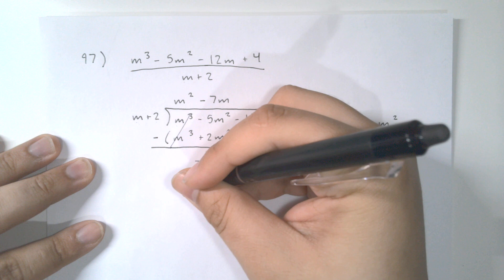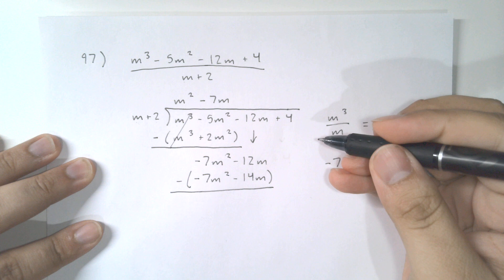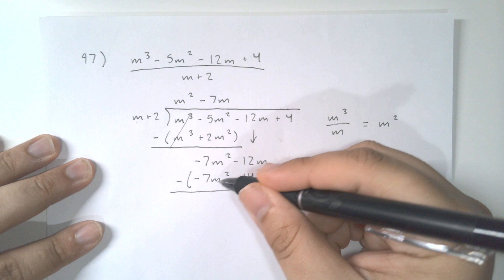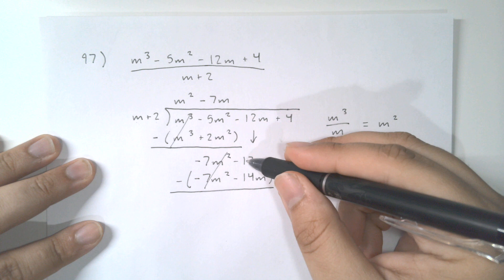We do subtraction again. This minus -7m² becomes plus, so -7 + 7 cancels. Then we have -12m minus -14m, which is -12 + 14, giving us a positive 2m.